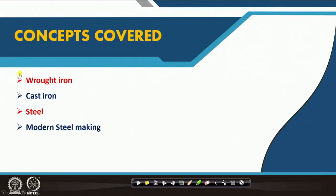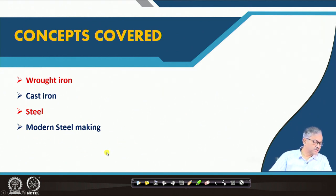What I will basically discuss is the wrought iron — that is the very primitive iron — and then I will talk about the evolution of cast iron, and finally the steel, and also the evaluation of the modern steel making process.